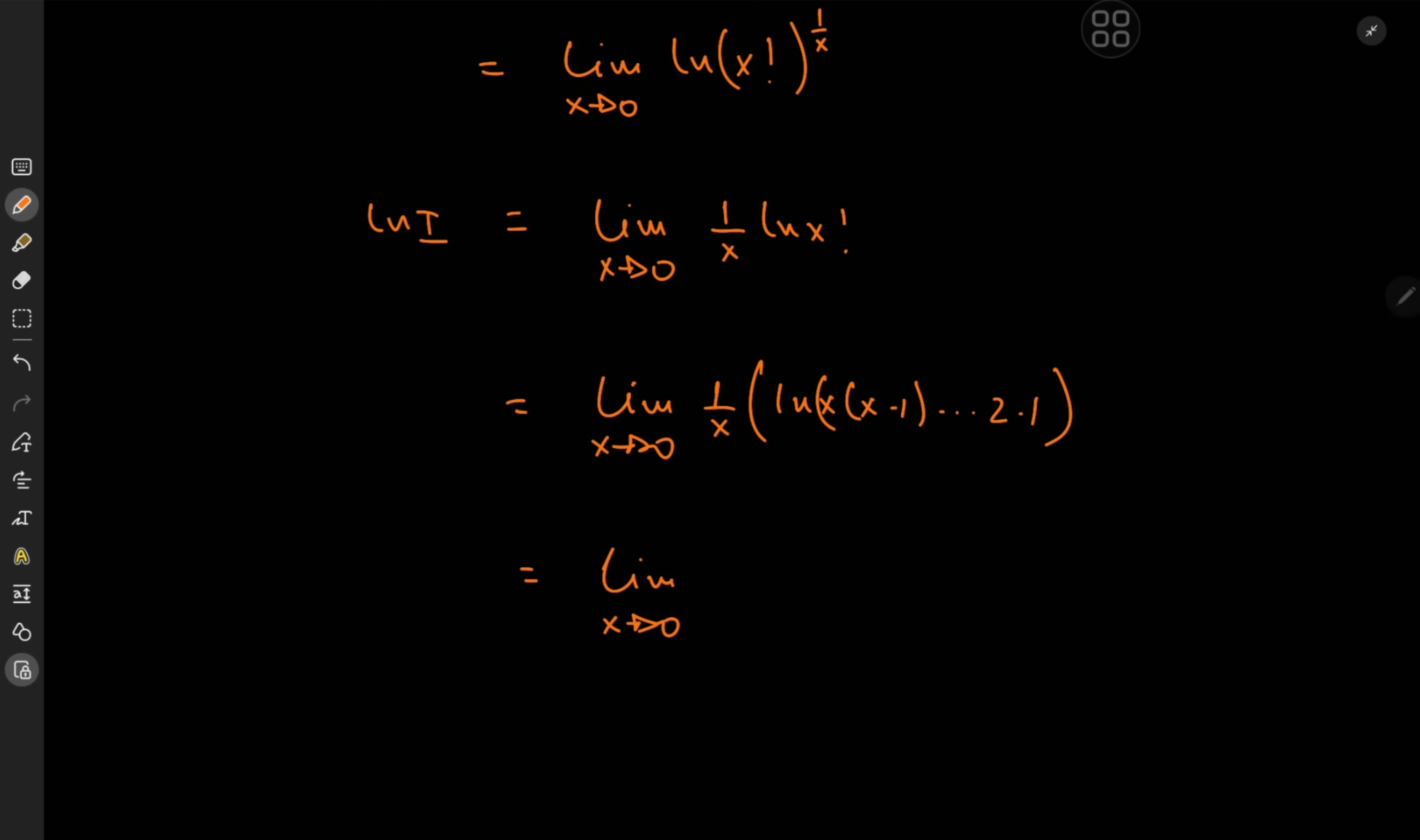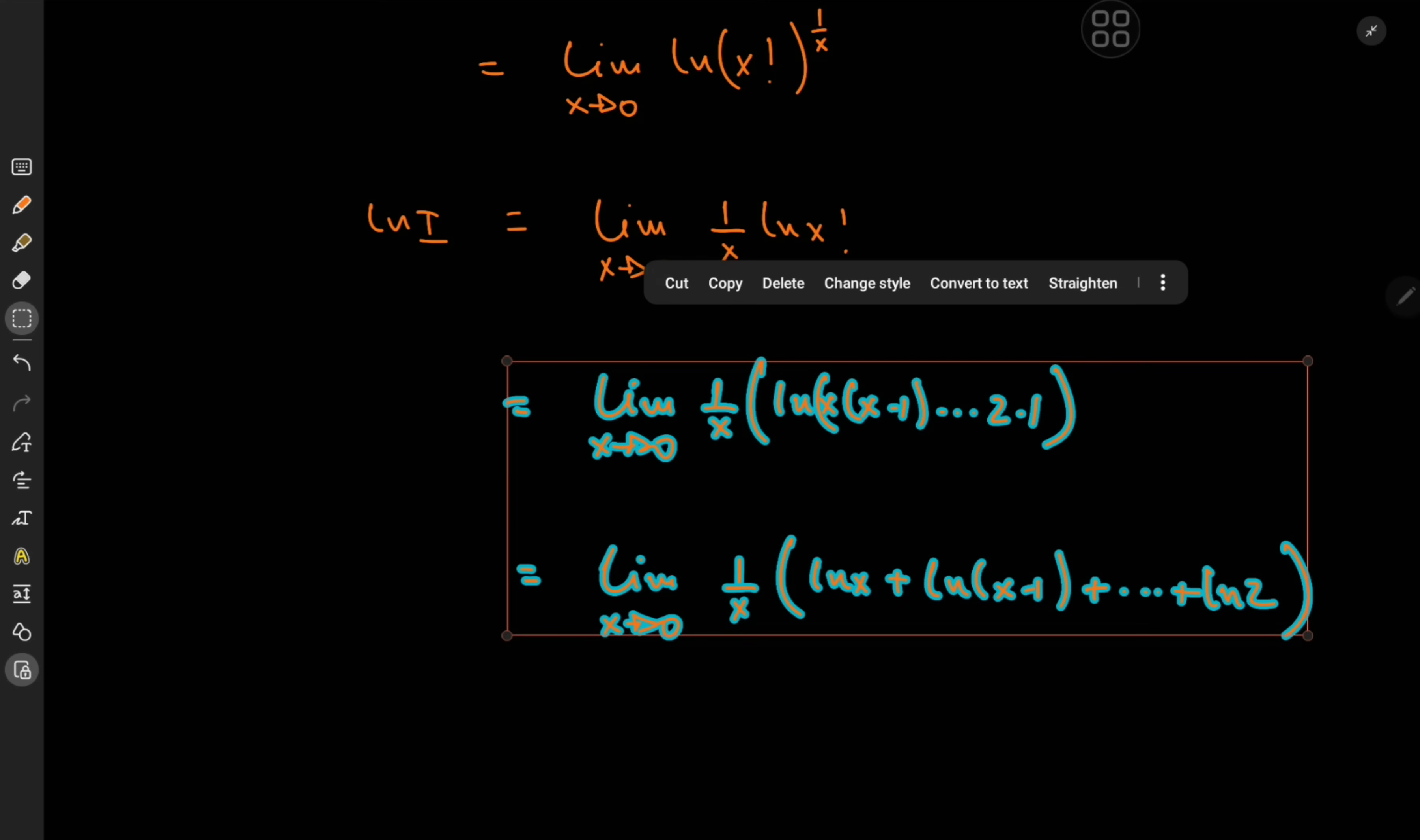So using the properties of the logarithm we can express this as a sum. We have limit of 1 over x times log x plus log x minus 1 and so on all the way to log 2 because log 1 is just 0. So you see we don't exactly have limits on which we can apply L'Hôpital's rule. The first one is just something that approaches negative infinity over something that approaches 0, so that's a no-go and for the rest we actually have complex numbers.